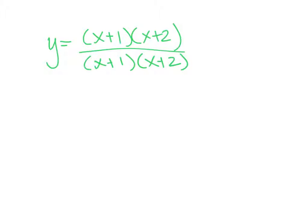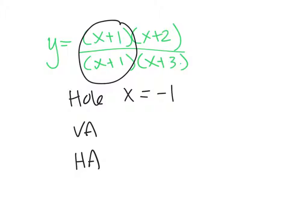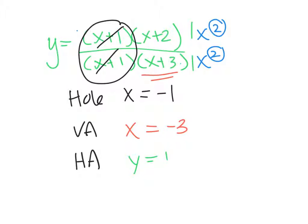Next part, if I write the function out, y equals x plus 1, x plus 2 over x plus 1, x plus 3, can you find the hole, the vertical asymptote, and the horizontal asymptote? So the hole, what you want to do is cancel out the common factors. So the hole is going to be x equals negative 1. The vertical asymptote, you remove the hole and set the denominator equal to 0. So the vertical asymptote is going to be x equals negative 3. The horizontal asymptote, we just did that, where you want to look at the degree. So in this case, the degree is the same. So you take the ratio, what's going to be y equals 1? Because it's 1 divided by 1, because the degrees are the same.